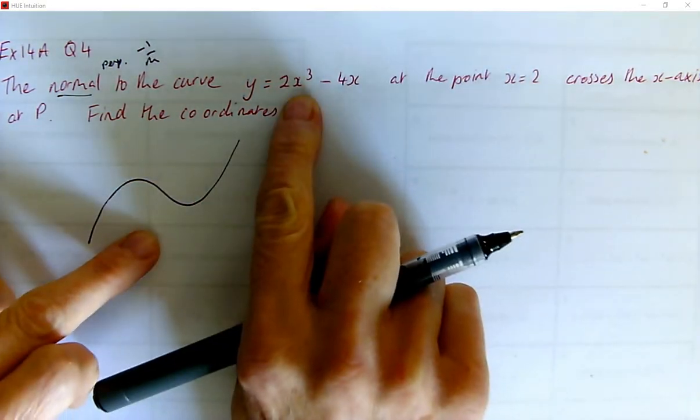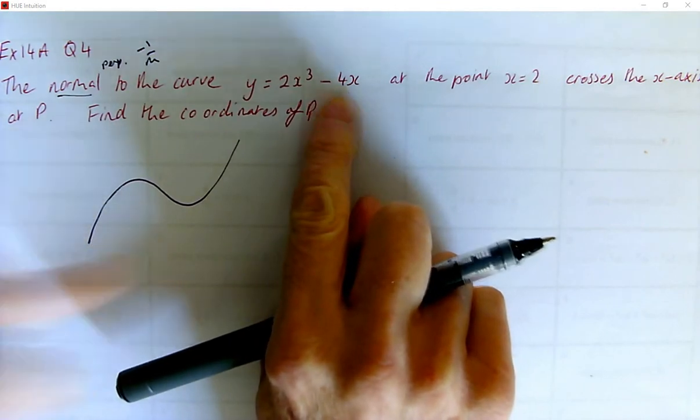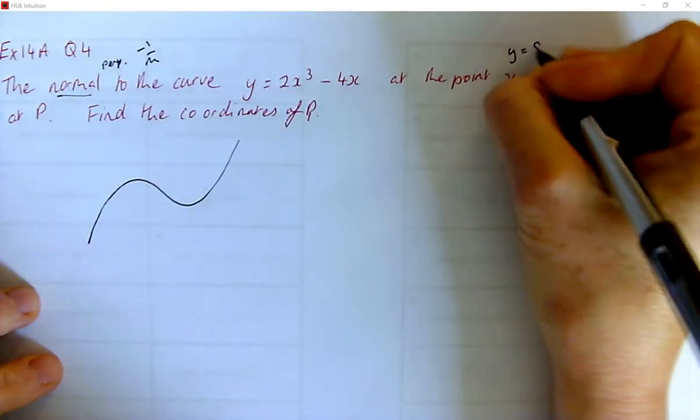If I put two in there, I'm going to get 16 and take a bit of eight, so it's going to be eight, two eight.